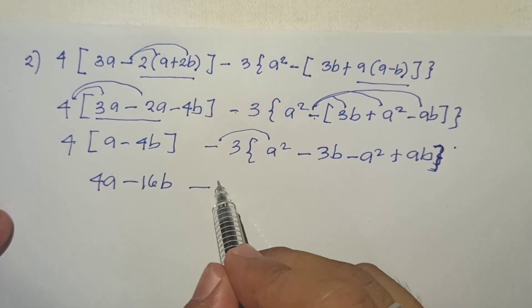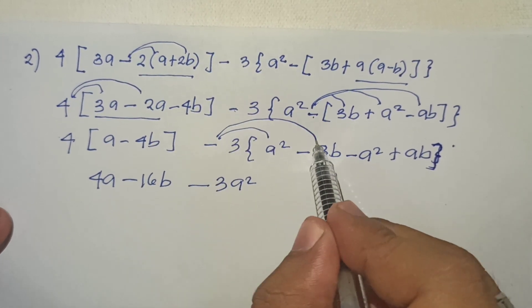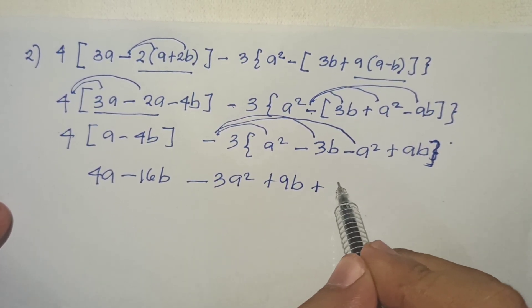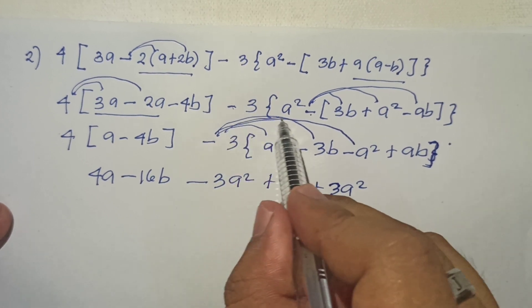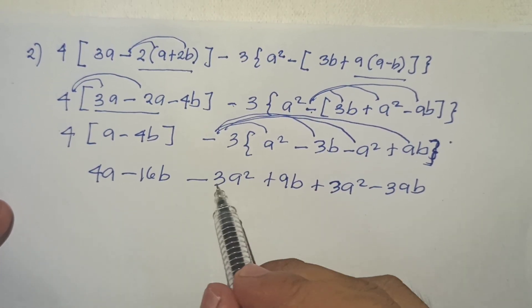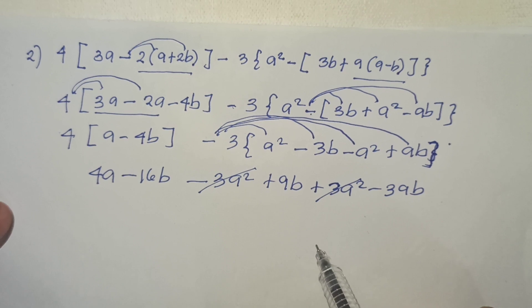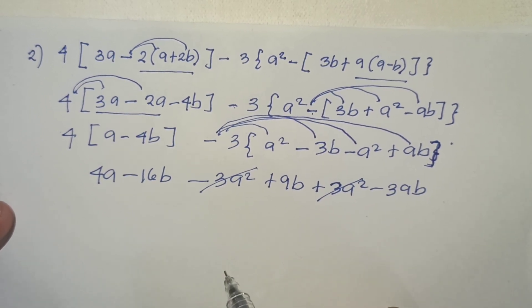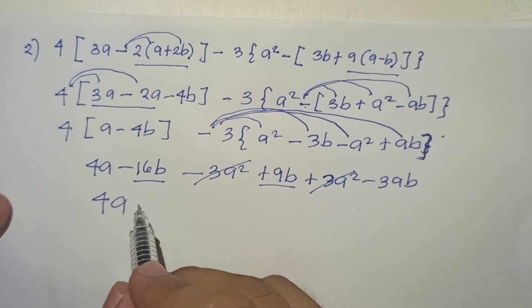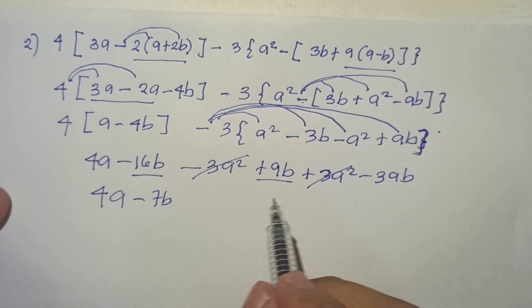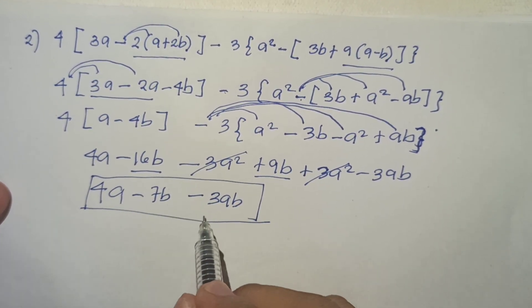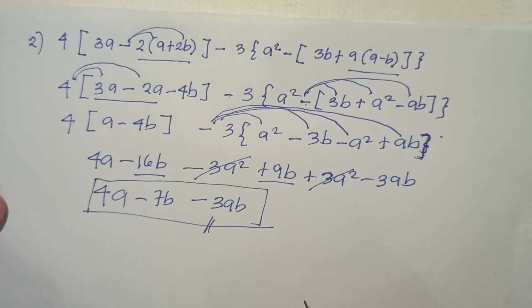We now have 4a minus 16b. Distribute to get 3a squared and plus 9b. Distribute to get plus 3a squared, then distribute minus 3ab. We cancel applicable terms. So 4a, and adding the b terms gives negative 7b, and minus 3ab. This is our answer: 4a minus 7b minus 3ab.